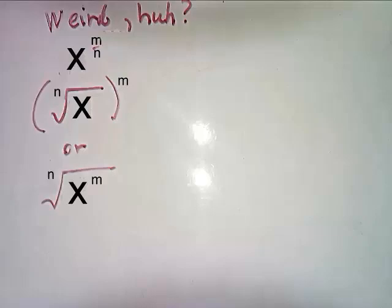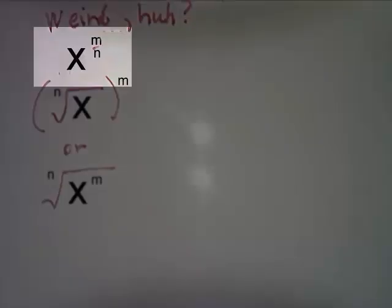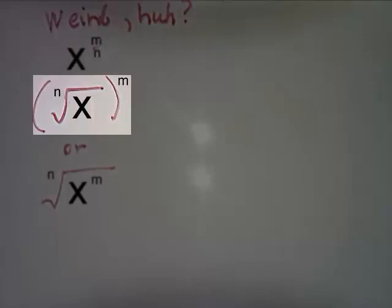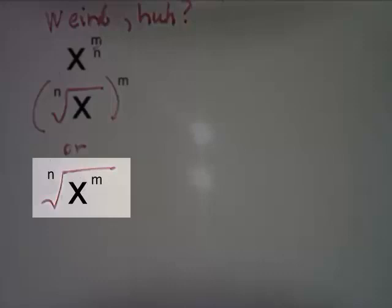These three forms are interchangeable. x to the power of m over n is the same as the nth root of x, then raised to the m power. Or take x to the m power and then find the nth root.